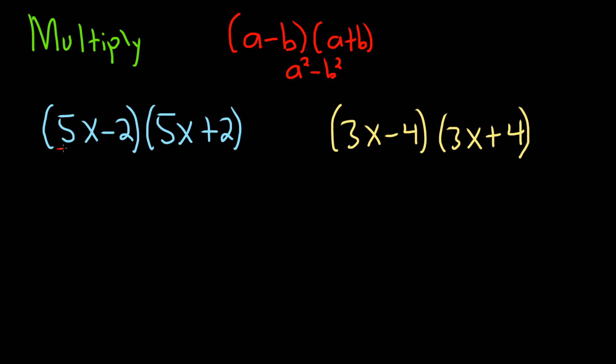In this first example, 5x is our a and 2 is our b. So when we multiply this out, we'll get (5x)² - 2². But it has to match. It's really important that it matches this formula. Notice it's (a-b)(a+b). I'll put them here so you see. It matches perfectly.